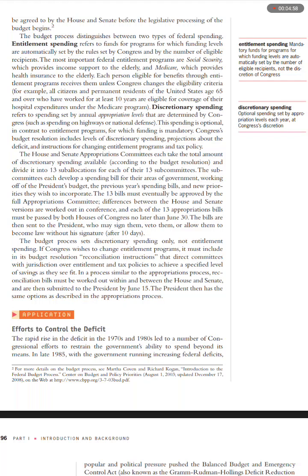The budget process sets discretionary spending only, not entitlement spending. If Congress wishes to change entitlement programs, it must include in its budget resolution reconciliation instructions that direct committees with jurisdiction over entitlement and tax policies to achieve a specified level of savings, in a process similar to the appropriations process. Reconciliation bills must be worked out within and between the House and Senate, and then are submitted to the President by June 15. The President then has the same options as described in the appropriations process.